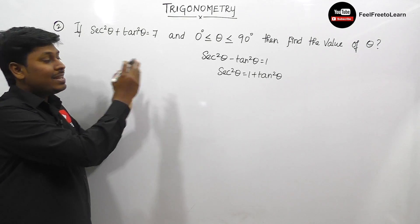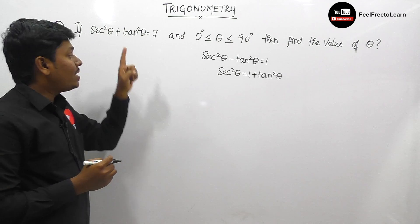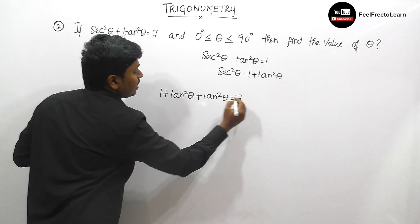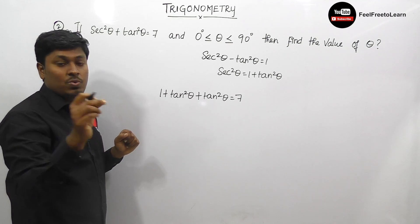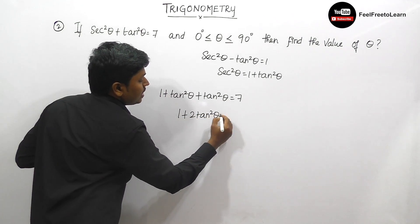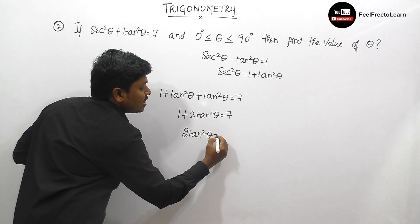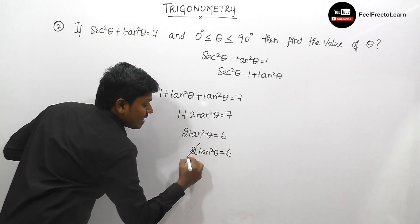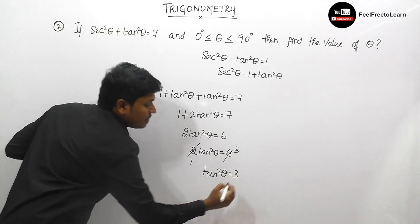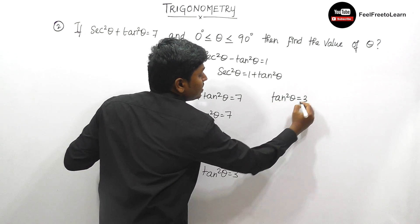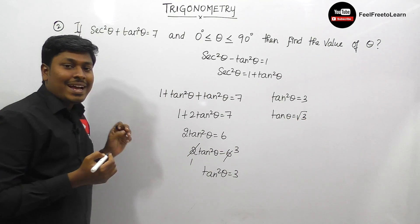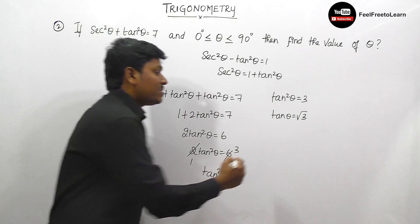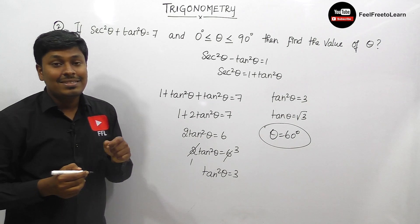Substituting sec²θ as 1 plus tan²θ into the expression: (1 + tan²θ) plus tan²θ equals 7, which gives 1 plus 2·tan²θ equals 7. So 2·tan²θ equals 6, and tan²θ equals 3. Therefore tan θ equals √3. We know tan 60° equals √3, so θ equals 60°. The answer for question number 2 is 60°.